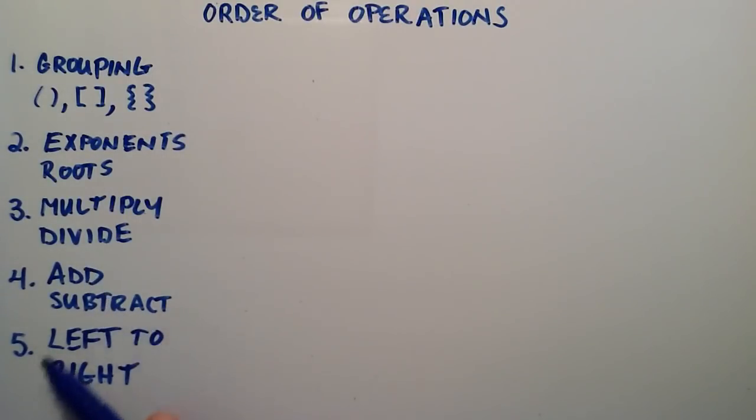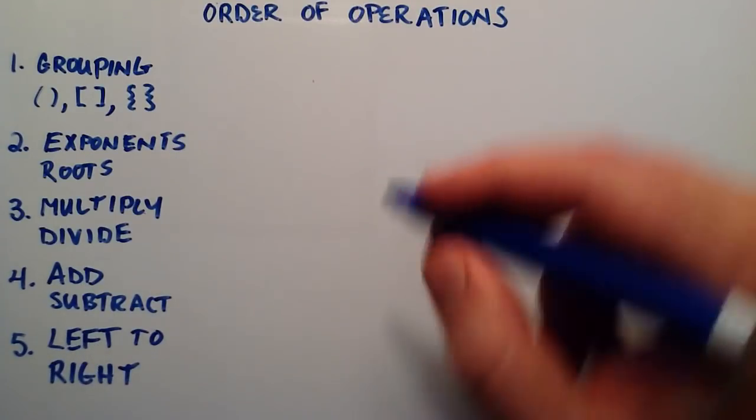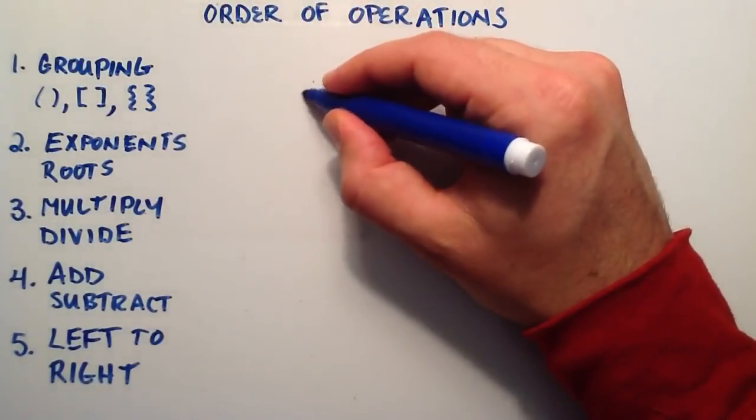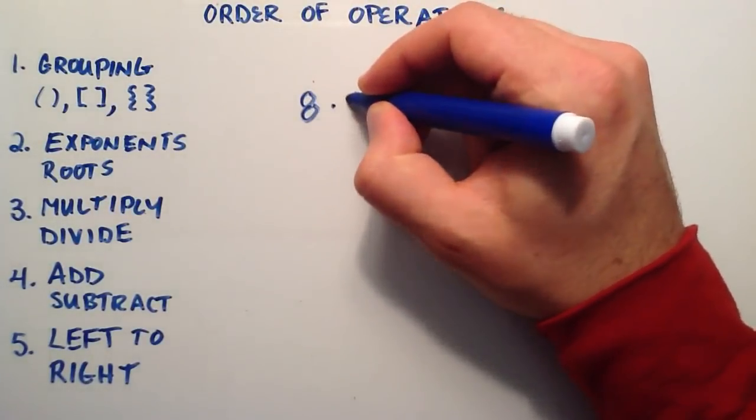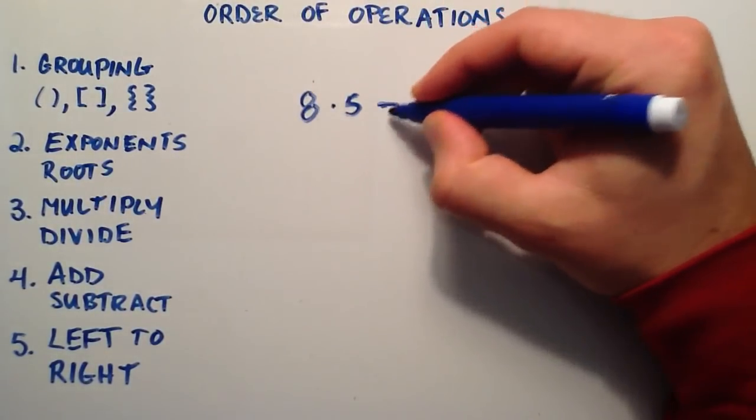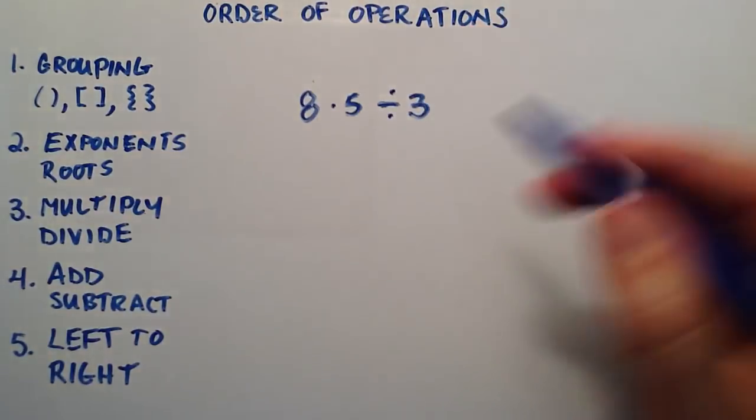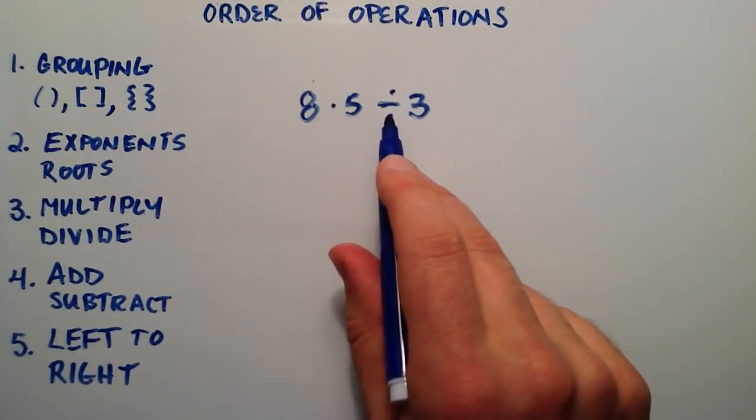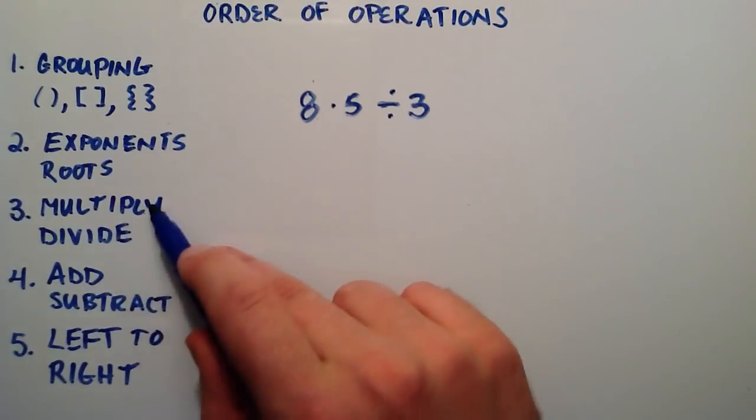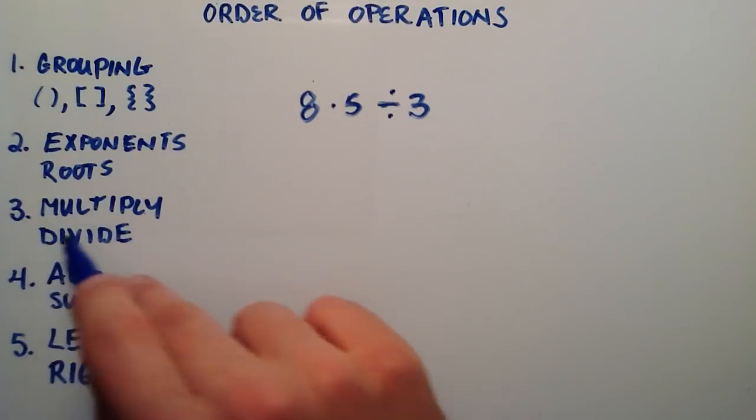And if there's any ambiguity along the way, we simply solve left to right. So what do I mean by step 5 here? Well, basically what I mean by that is if we had something like 8 times 5 divided by 3, well, this is multiplication, this is division, and multiply and divide are both priority 3 on my list here.